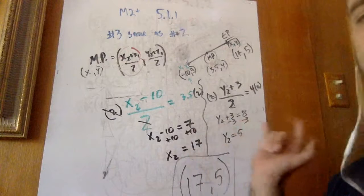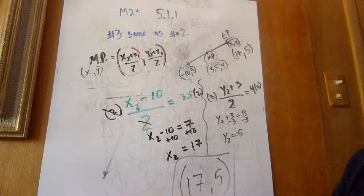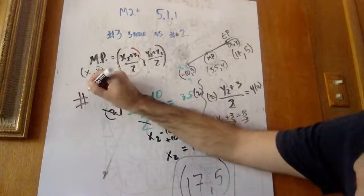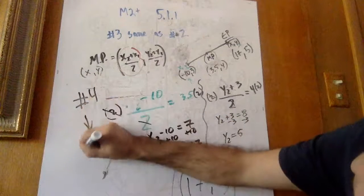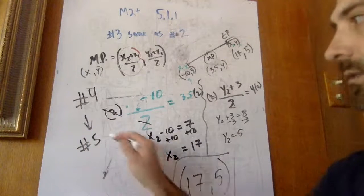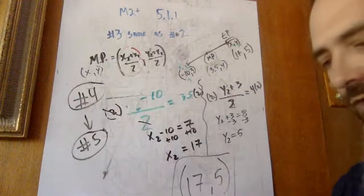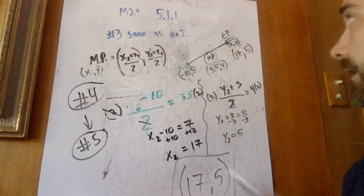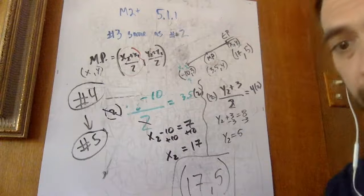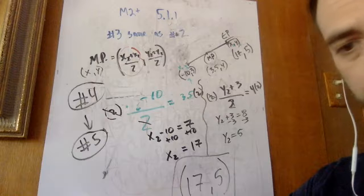It looks like the problem I just did was number 4. Remember I said 3 is like 2. Number 4 is the same as number 5 — you're going to do the same approach, finding the other endpoint. So when you get to number 5, just approach it the same way. That's it, guys — hope you're doing well. Take care. Bye.